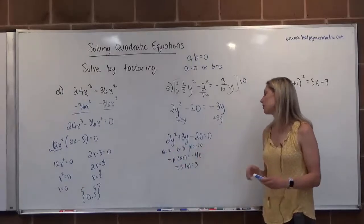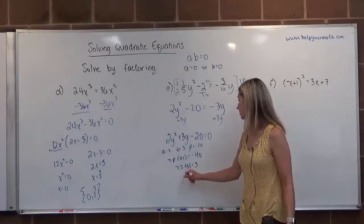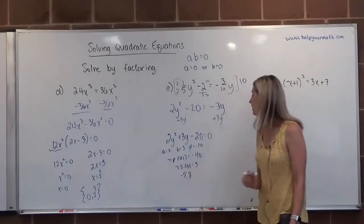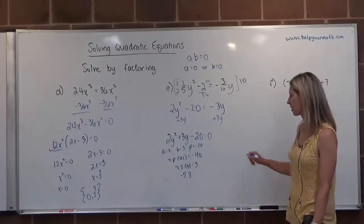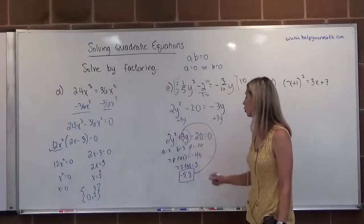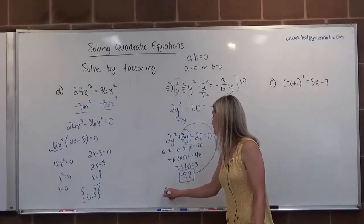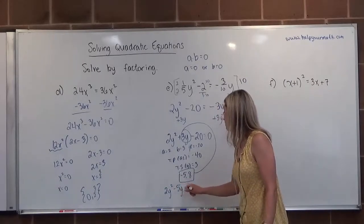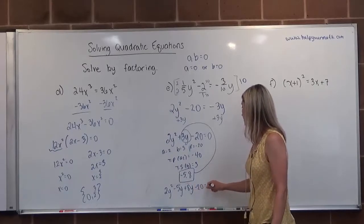We're looking for two numbers that multiply to negative 40 and add up to positive 3. I think we want to consider negative 5 and positive 8, because those will multiply to negative 40, and negative 5 plus 8 will add up to 3. We're going to take our winning combination and replace the missing terms. So instead of 3y, we're going to have negative 5y plus 8y. That's going to be 2y squared minus 5y plus 8y minus 20 equals 0.